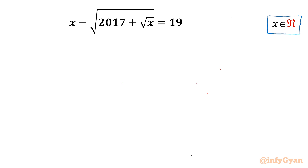Let's get started by writing the domain of the equation first. Square root x is involved, so x should be positive. Equality won't hold true if we apply x equals 0, since LHS would be minus square root 2017, which is not equal to 19. So one condition is clear: x should always be positive.